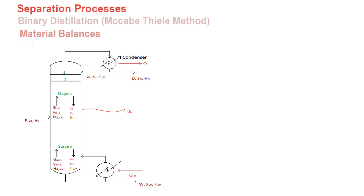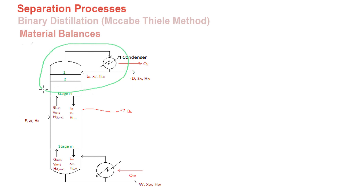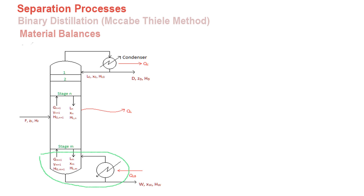In this video we'll be continuing to construct the different material balances around the distillation column. We will construct the material balance around the condenser, around the rectifying section of the column — the top part of the column as you can see here — and the stripping section that you could also see here. We'll be constructing different material balances for each system boundary, and this plays an integral role in developing the McCabe-Thiele method and developing certain equations used to construct the graph within the McCabe-Thiele method.